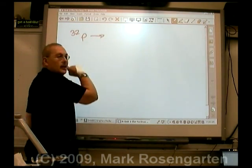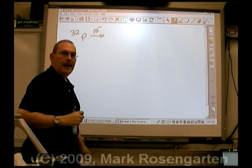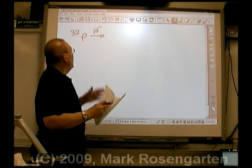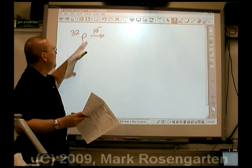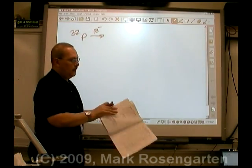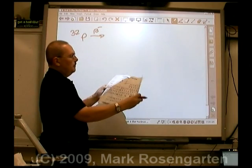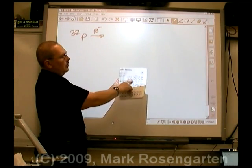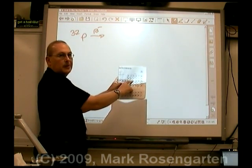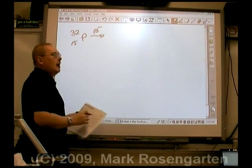Now, you can draw an arrow, and just to make it a little bit easier for you, you can draw a little beta minus there. The other information you need is the atomic number of phosphorus, and you can find that on the periodic table. There's phosphorus with an atomic number of 15.